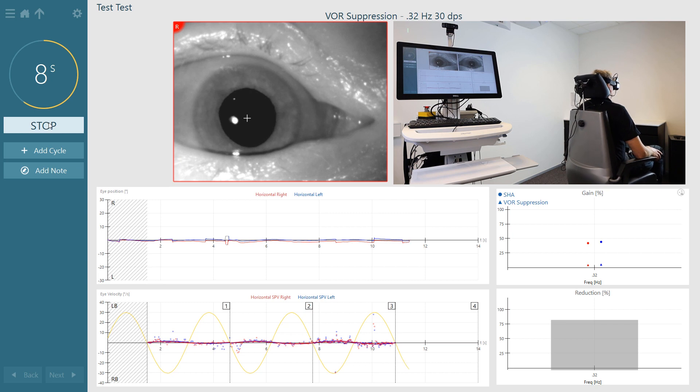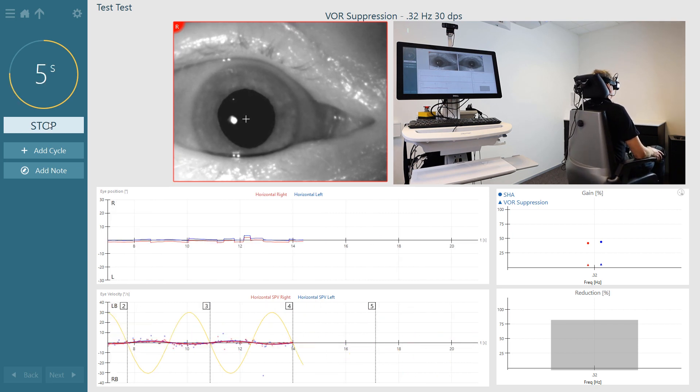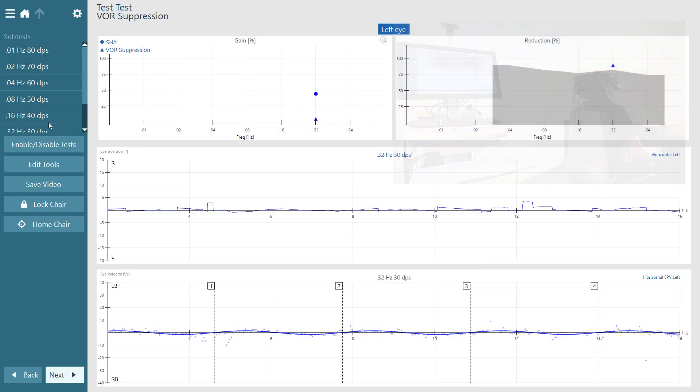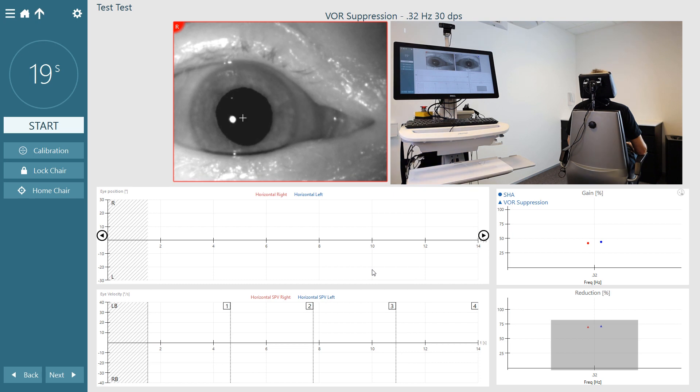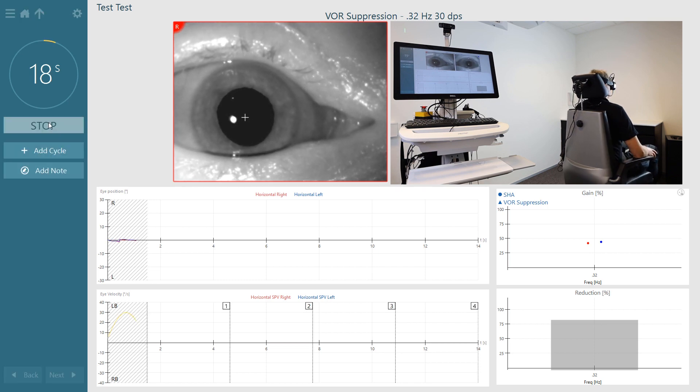The rotational assessment, however, has a stimulus of a much higher frequency. As such, VOR suppression testing is sensitive to central conditions that are much more mild, as the higher frequency in VOR testing taxes the central system to a higher degree.